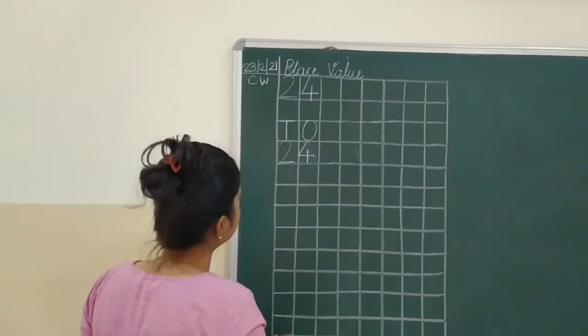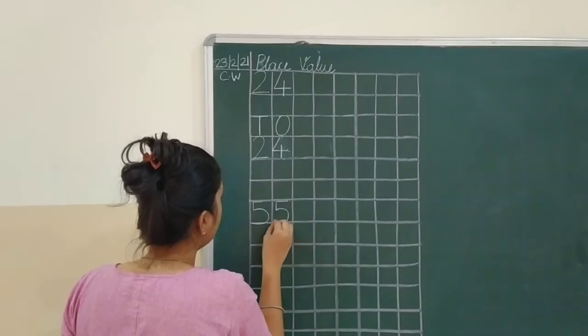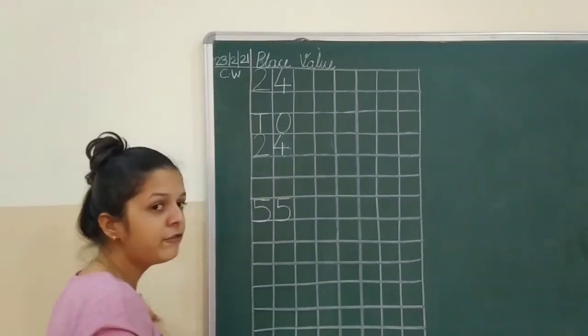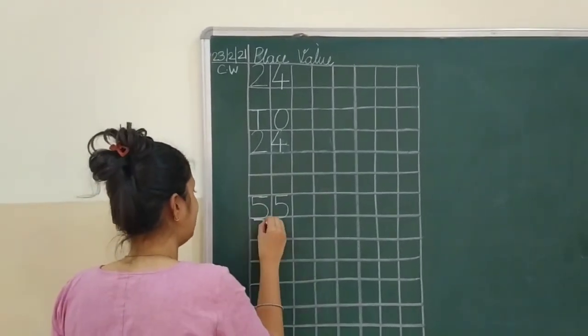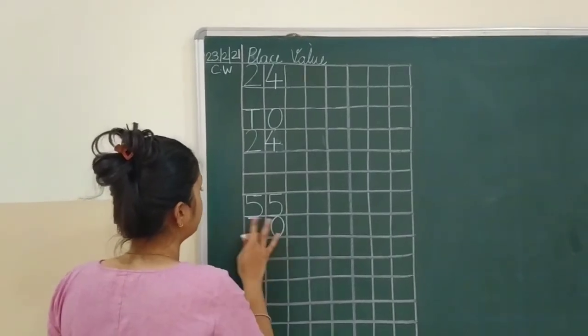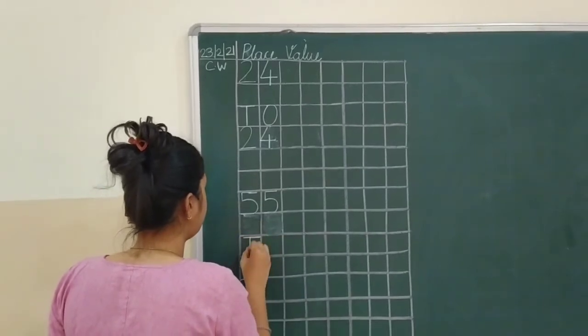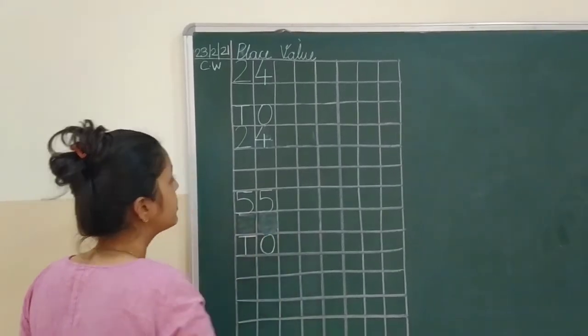Now, let's see the next number. 5, 5. 5, 5, 55. Let's write T, O. Okay, we leave a line in between. Okay, T, O.